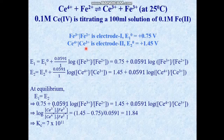Cerium is a lanthanide. For system one, the E° value is +0.75 V, while for the cerium system it is +1.45 V. Now try to find what the ΔG° value should be. In both cases the ΔG° value would be negative, because ΔG° = −nFE°.